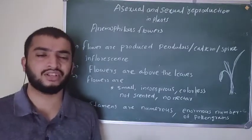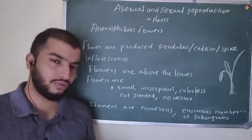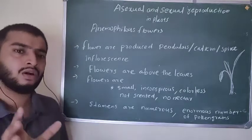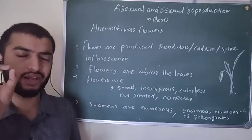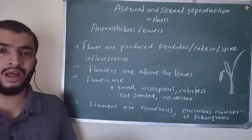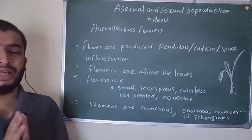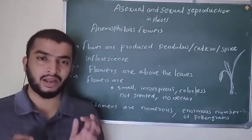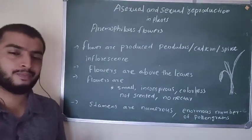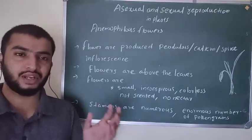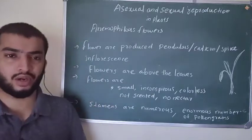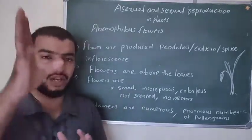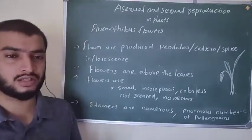Anemophilous flowers are not scented — there is no smell at all — and no nectar is present, because pollination is done with the help of wind. There is no need to attract insects or birds. The stamens are numerous, and the anthers produce a large number of pollen grains. The stigma of the flower is large and feathery, modified to catch the pollen grains. These plants produce flowers before new leaves form, to avoid hindrance from leaves when releasing pollen grains.